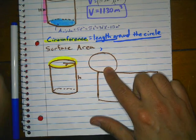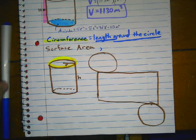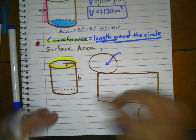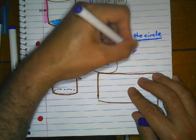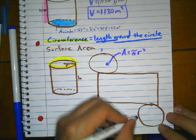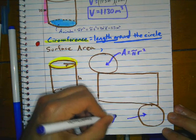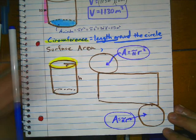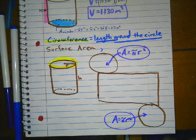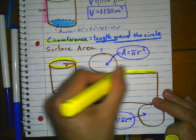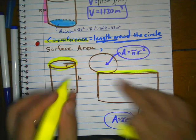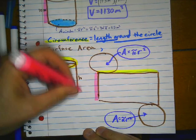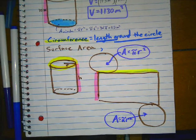The area of each circle is pi r squared, and the same for the bottom circle. Now, the length around the circle — the circumference — is going to be the length of the rectangle that forms the side of the cylinder.